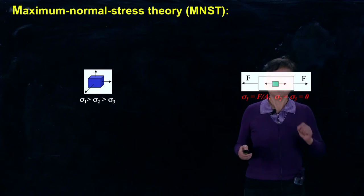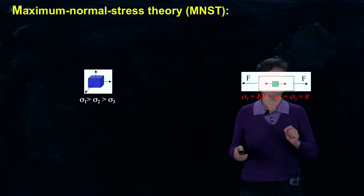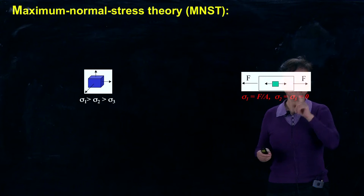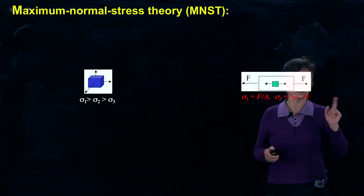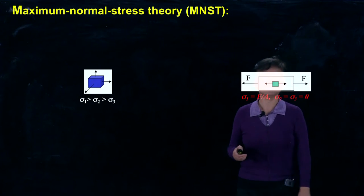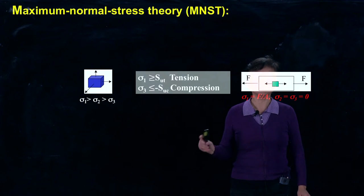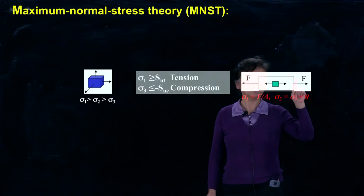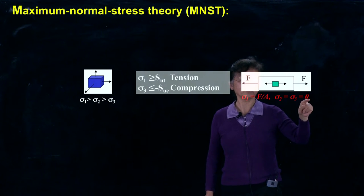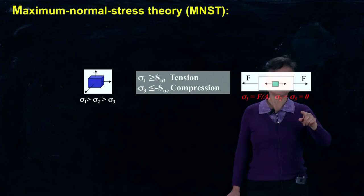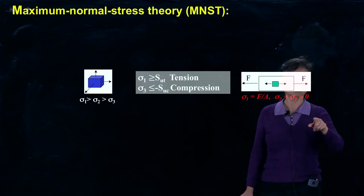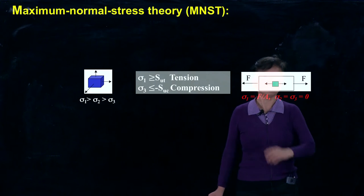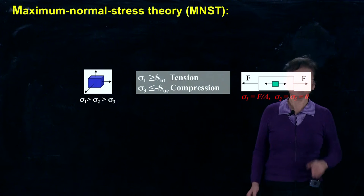When failure happens, particularly for this uniaxial loading case, the principal stress reaches the limit, which is the ultimate strength. We have two situations. If it's under tension, when σ1 is larger than the tensile strength, then failure happens. For the compressive case, if σ3 is smaller, further negative than the ultimate compressive stress, then failure happens.